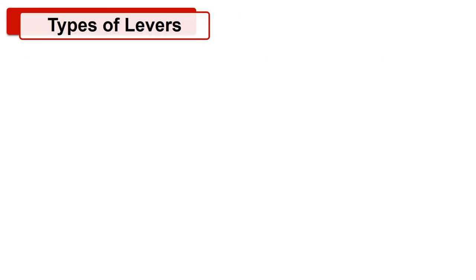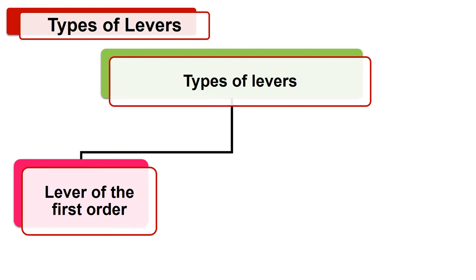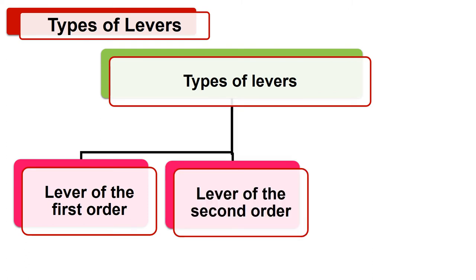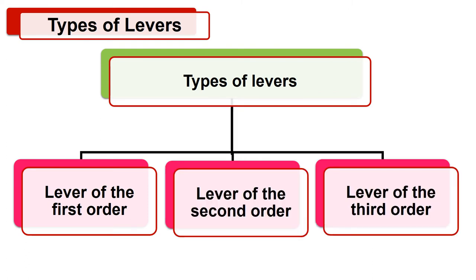Now we will discuss types of levers. There are three types of levers depending upon the position of the effort, the fulcrum, and the load. That are lever of the first order, lever of the second order, and lever of the third order. Let's see these levers one by one.